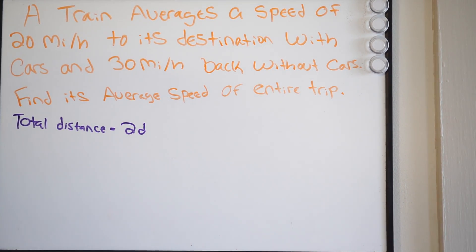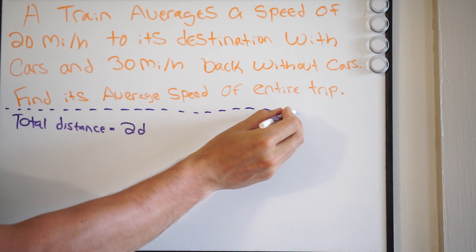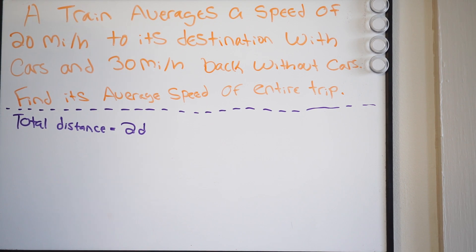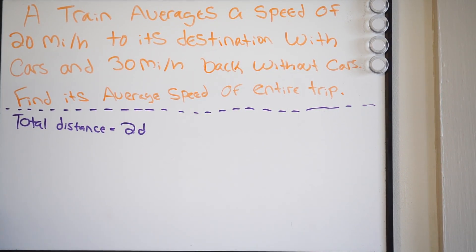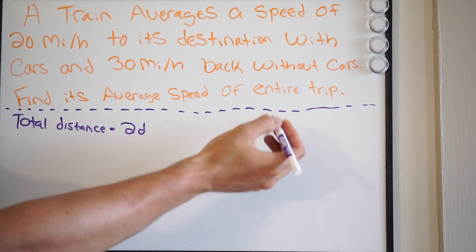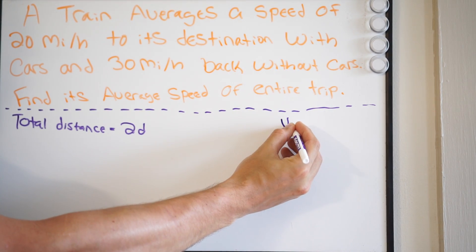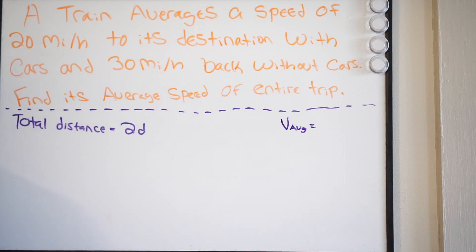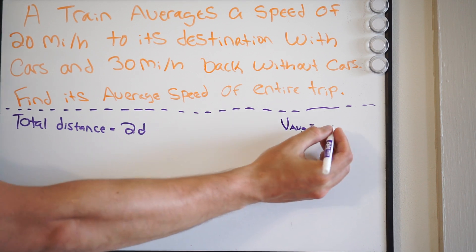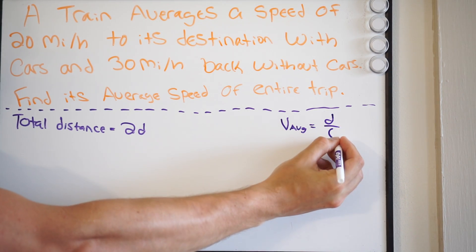They're asking for the average speed of this entire trip. So what formula could we use for average speed? We could call it velocity, so V average. How do we get the speed? It's going to be distance over time.